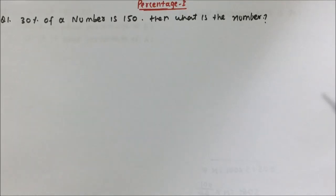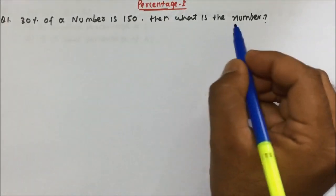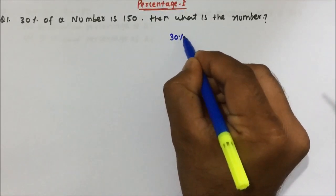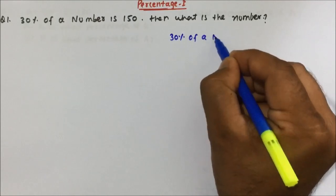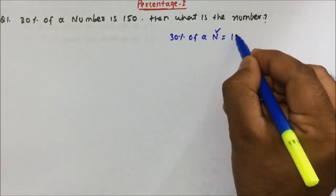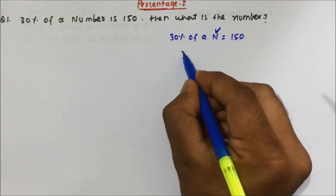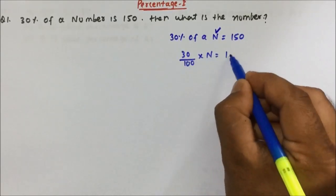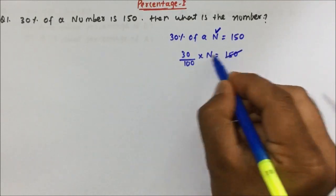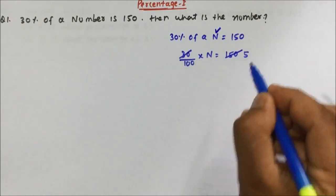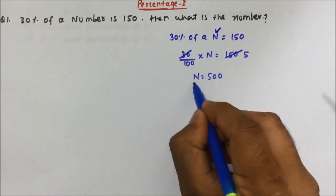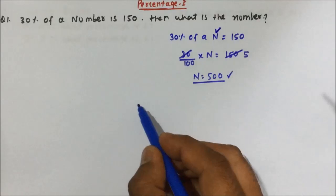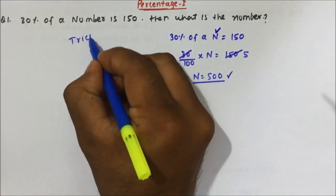Question 1: 30 percent of a number is 150. What is the number? We'll solve it by the normal method. 30 percent of a number equals 150. Writing 30/100 × N = 150, we cross-multiply: N = (150 × 100) / 30 = 500. So the number is 500, whose 30 percent is 150.